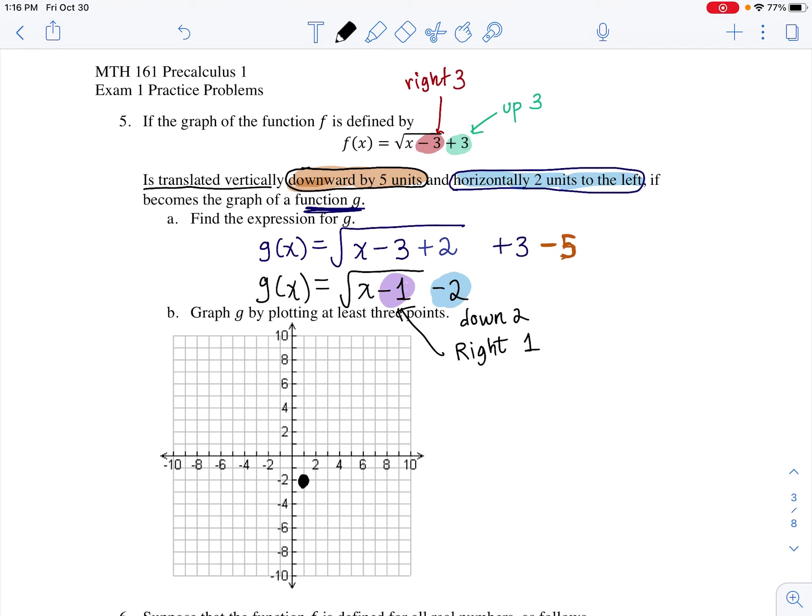So let me plot at least three points. The first ordered pair is one for the x value, negative two for the y value, so one, negative two. The next one, let me just plug in two to see what I get. g(2) is equal to square root of two minus one, minus two. That equals square root of one minus two, which is one minus two, so that is negative one. Let me plot two, negative one right there.